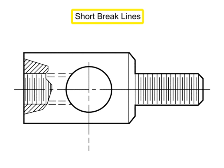Short brakes are indicated by solid freehand lines, and are typically used to illustrate smaller section views, where removing material from the part illustrates features otherwise not shown.